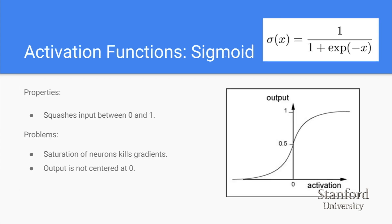Let's go over activation functions quickly. The sigmoid function squashes input between 0 and 1. However, it causes neuron saturation — very large or small activations always give 1 or 0 — and its output is not centered at 0. When the output is always positive, gradients are always negative or positive, which limits adaptivity. It is also computationally expensive due to the exponent calculation.